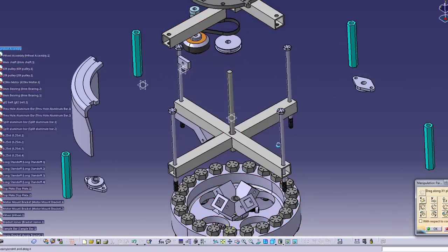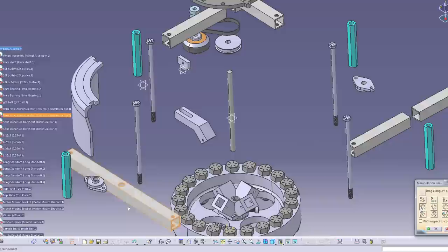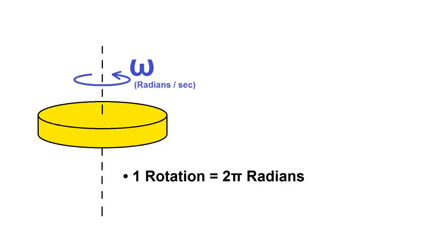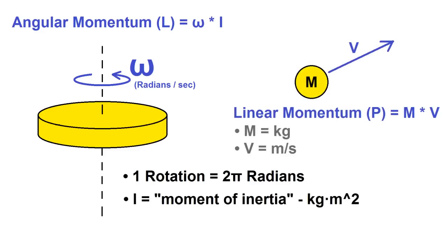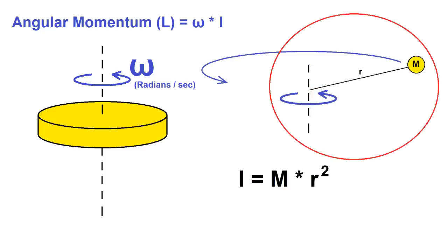Before I dive too deep into the design details I should probably explain a little bit about how gyroscopic stability actually works. So you have a disc spinning with the speed omega, which is its rotational speed in radians per second. The angular momentum of that disc will be equal to omega times i, the moment of inertia. The moment of inertia is the rotational analogy of mass inertia in an object with linear momentum. It's calculated by taking the mass times the square of its distance r from the center of rotation.